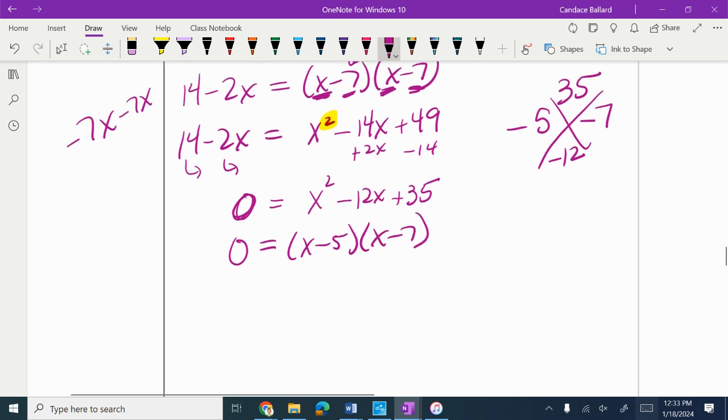Now we're going to do the zero product property to solve that. I need to split these up and set them equal to 0. It doesn't matter what side the 0 is on. I'm going to add the 5, so x equals 5. I'm going to add the 7, so x equals 7.